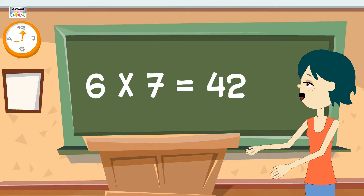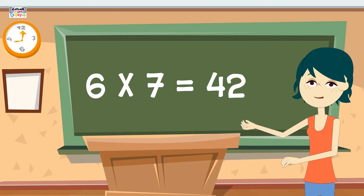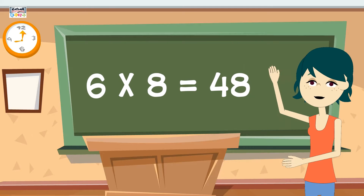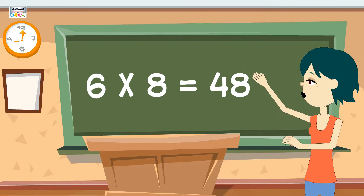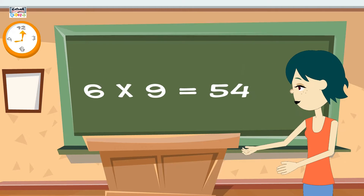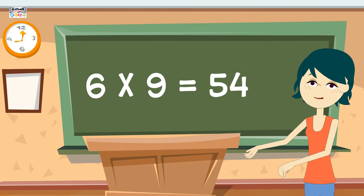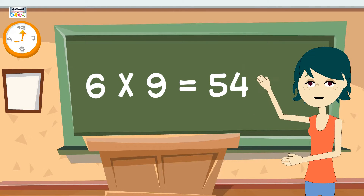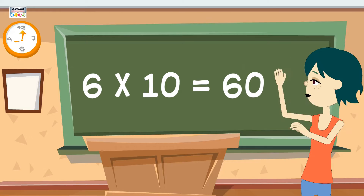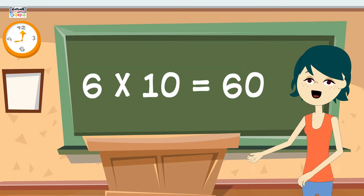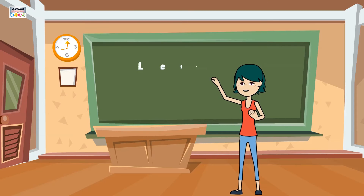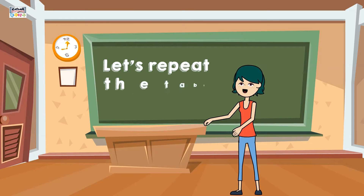6 7's are 42, 6 8's are 48, 6 9's are 54, 6 10's are 60. Let's repeat the table.